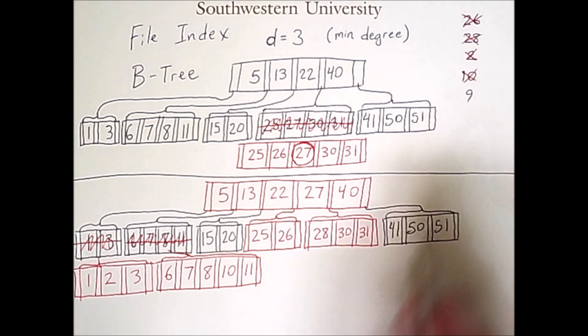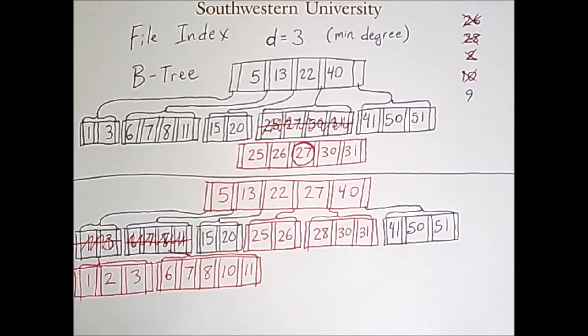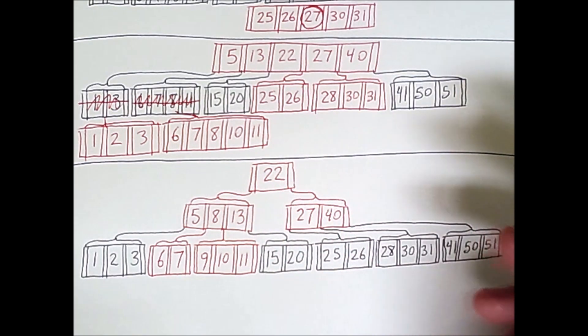Now this next insertion with a 9 is going to cause a massive update, so I'm going to redraw the entire tree. What we're actually going to see is how the depth of the tree can increase, but all of the leaves will still be at the same depth. So here we have the final B-tree.